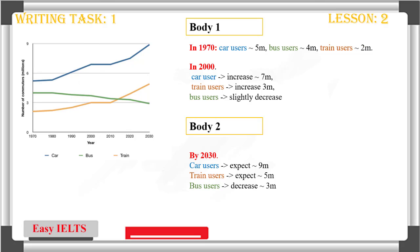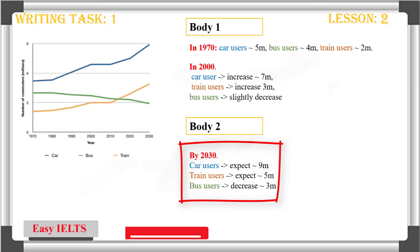Now let's have a look at Body 2. As previously said, you can simply use the last year shown in the graph. But you should also remember that you need to name the change over time — increases and decreases. In this case, car users are expected to rise up to 9 million, train users to 5 million, whilst bus users are expected to decrease down to 3 million. It is very important to make those notes so you can easily write your sentences later, but do remember you only have about 20 minutes for this writing task, so don't spend too much time on taking notes.